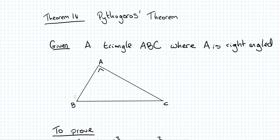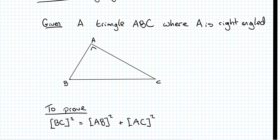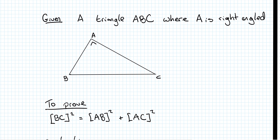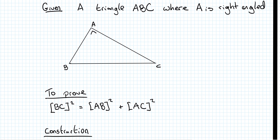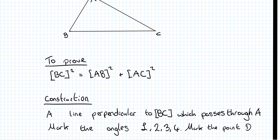We know Pythagoras's theorem, and what we're asked to prove is that BC squared — the hypotenuse squared — is equal to AB squared plus AC squared. For the construction, we have to construct a line straight down from A that is perpendicular to BC.